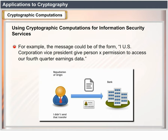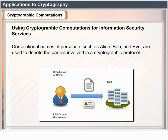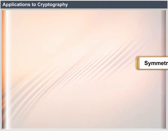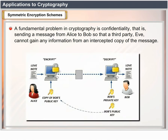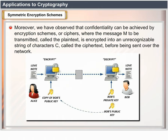This section gives an introduction to cryptographic computations. Conventional names of personas such as Alice, Bob, and Eve are used to denote the parties involved in a cryptographic protocol. A fundamental problem in cryptography is confidentiality — sending a message from Alice to Bob so that a third party Eve cannot gain any information from an intercepted copy. Confidentiality can be achieved by encryption schemes or ciphers, where the message M, called the plain text, is encrypted into an unrecognizable string C, called the ciphertext, before being sent over the network.